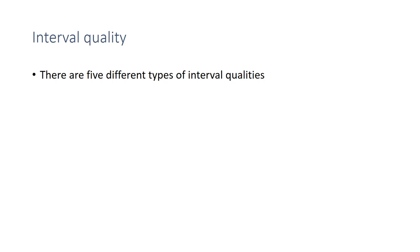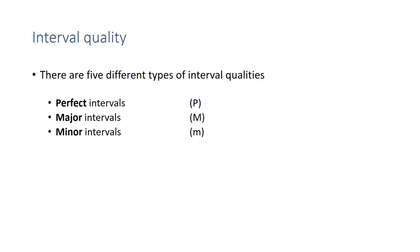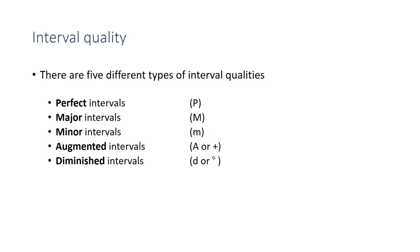There are five different types of interval qualities: perfect intervals, major intervals, minor intervals, augmented intervals, and diminished intervals. In addition to the numeric size, we use one of these labels — P, M, lowercase m, A, or D — to indicate the complete interval name.